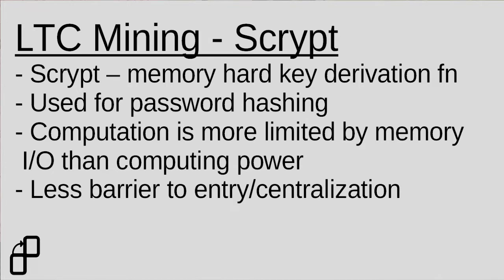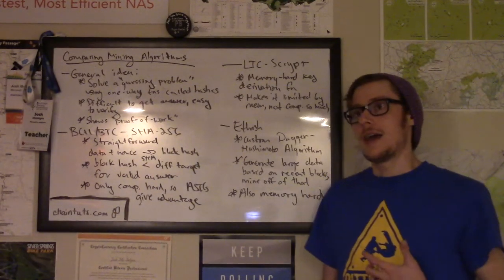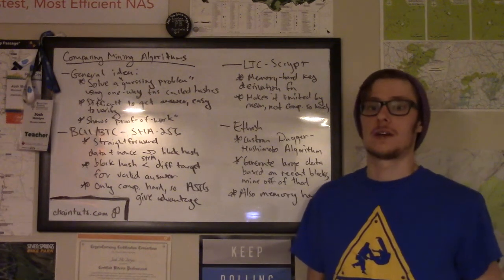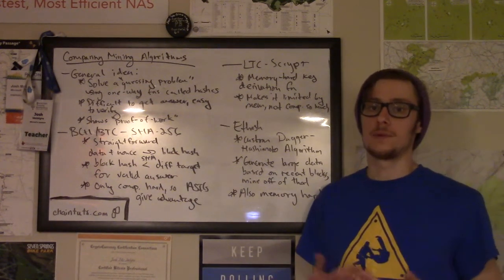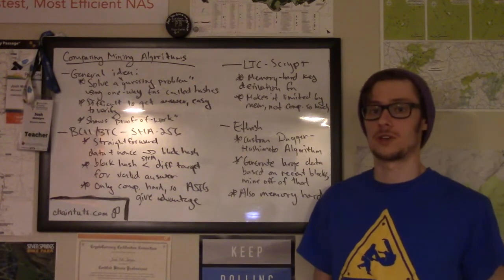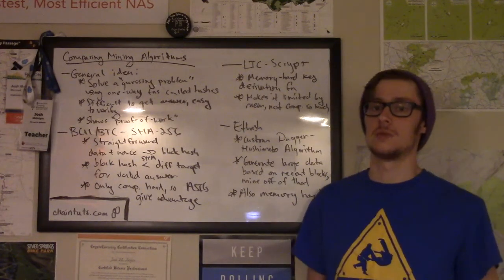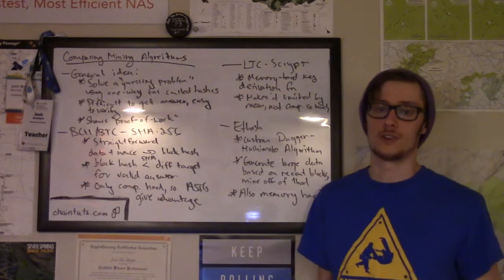Scrypt is a memory-hard problem — it's designed to take up a lot of memory and require a lot of reads and writes to memory. What that means is it's more limited by the amount of memory in the system doing the mining and the input/output operations to that memory than it is by computing operations. That means it's not necessarily going to require an ASIC to do Litecoin mining. A lot of people still use GPUs and pretty high-end hardware to do Litecoin mining, but it's more feasible to mine Litecoin as an individual user than it is to mine Bitcoin or another cryptocurrency using SHA-256 mining.